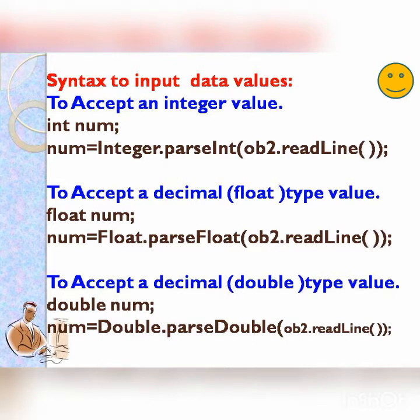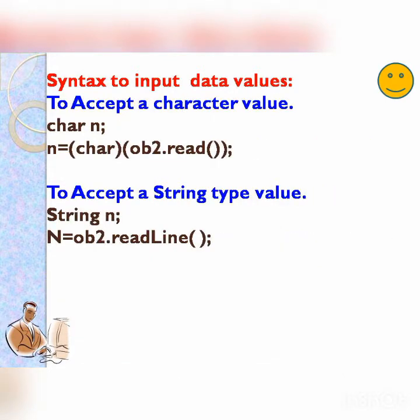Then to accept a double type value: double num = Double.parseDouble(obj2.readLine()). Next, how to input a character type value: char n = (char) obj.read(). Similarly, to accept a string: n = obj2.readLine(). These are the BufferedReader functions.